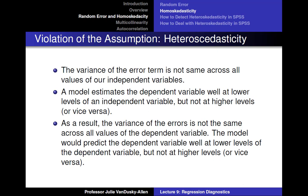Often, our regression models violate homoscedasticity. When we violate homoscedasticity, we call it heteroscedasticity. This just means the variance of the error term is not the same across all values of our independent variable. Substantively, this means that our model estimates our dependent variable better at some values of our independent variable and worse at other values. As a result, the variance of the errors is not the same across all values of the dependent variable. The model may predict the dependent variable well at lower levels of the dependent variable, but not at higher levels, or vice versa.